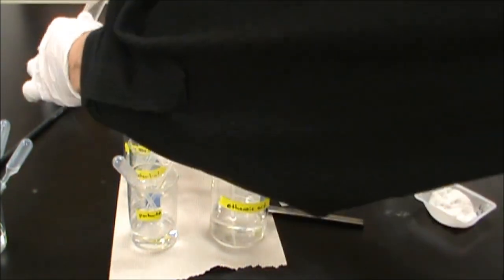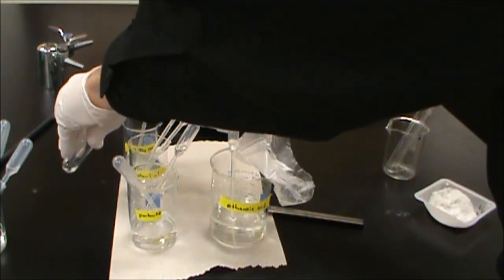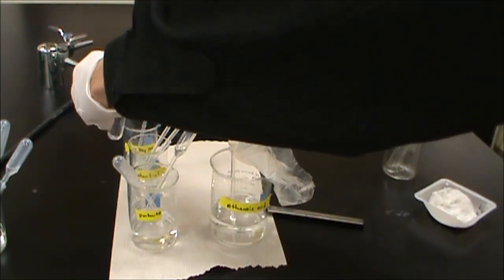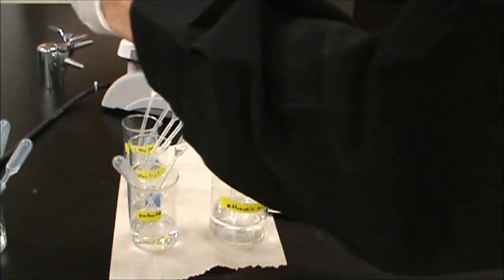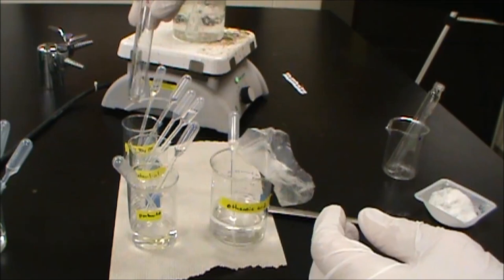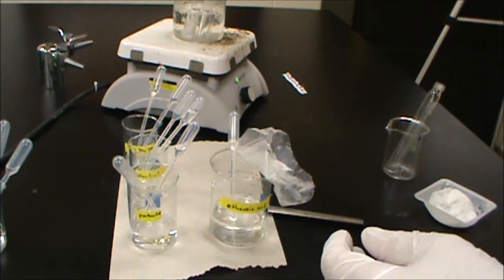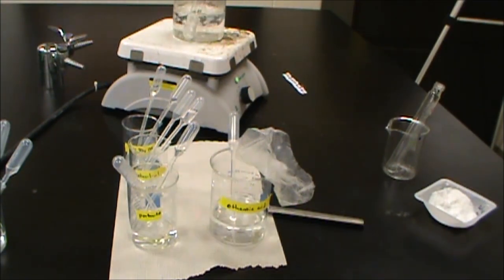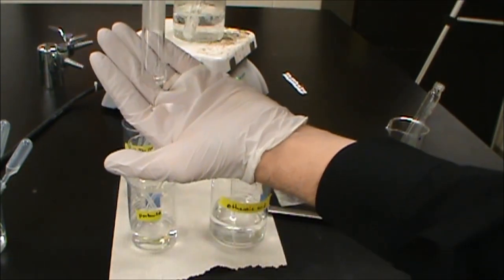And we're going to go ahead and add two drops of sulfuric acid for the catalyst. And make sure we get that off the sides. And there we go. That's ready to go in our hot water bath for about five minutes. So you'll note that this one is clear and colorless to start.